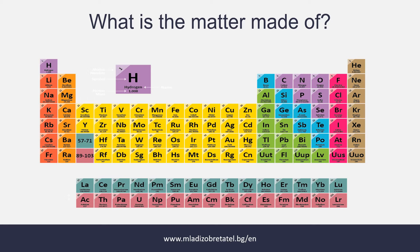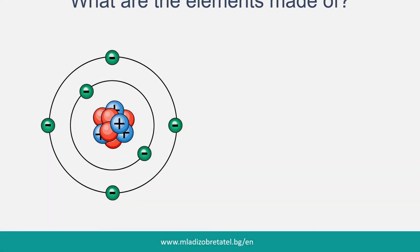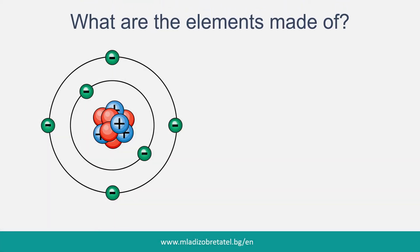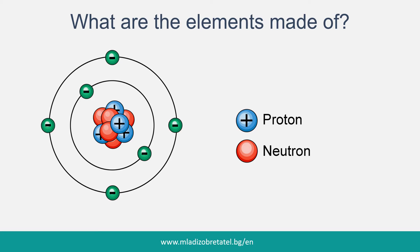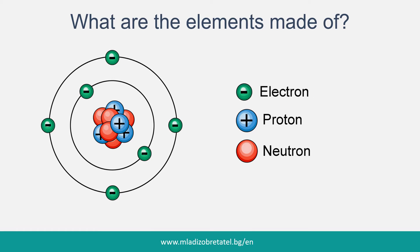Now let's dig a little bit more. The next question: what are the elements made of? Each element is made of atoms. Atoms have a central core filled with positively charged protons and neutrally charged neutrons. Surrounding the core in several orbits are negatively charged particles called electrons. All atoms are arranged in the same way. The only important difference is the number of protons and electrons each atom has. For example, hydrogen has one electron while gold has 79.